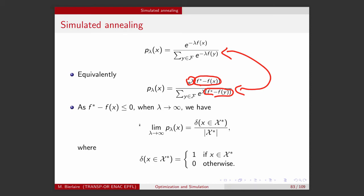So asymptotically, this probability will be zero for any non-optimal solution, and will equal one divided by the number of optimal solutions for all optimal solutions. In particular, if there is a unique optimal solution, the probability will be one. That is what we mean by the fact that the mass is concentrating on the optimal solutions.